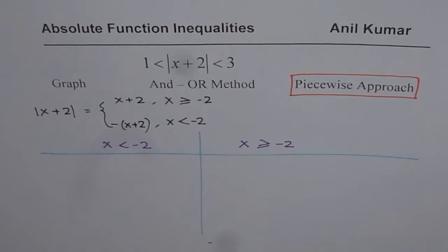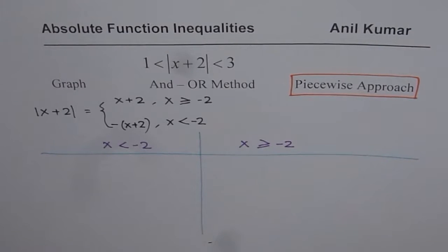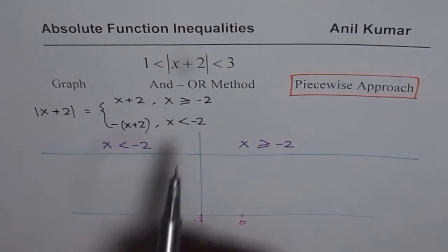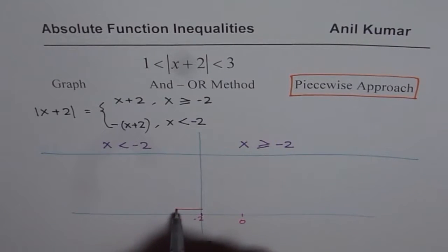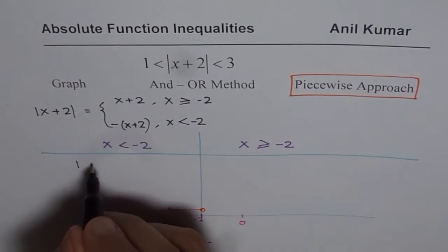If you are working in the domain of x values less than minus 2, let me draw a number line to show what I mean. Let us say this is minus 2 and this is 0. So if you are on the left side of minus 2, the absolute value is the negative value of x plus 2. When solving the inequality in the domain on the left side of minus 2, we can write the absolute function accordingly.